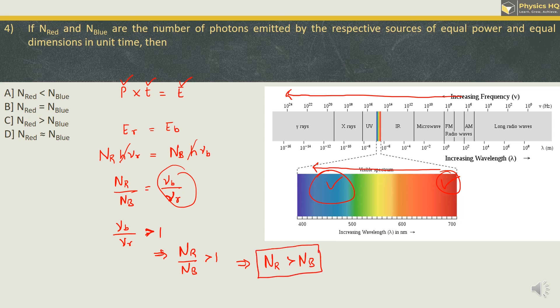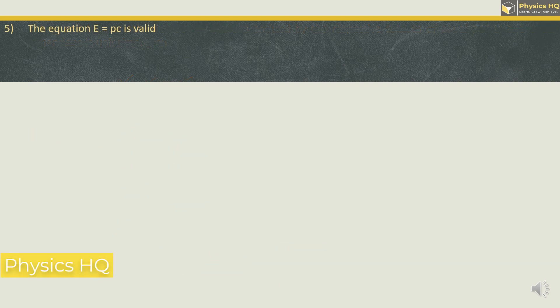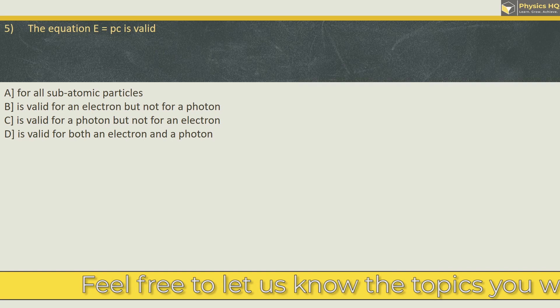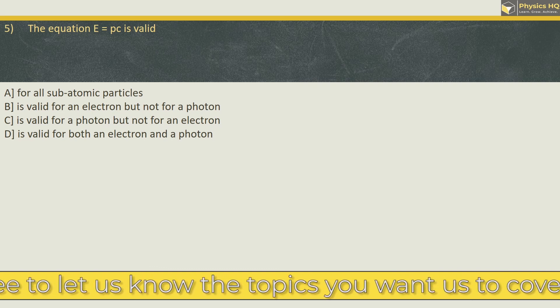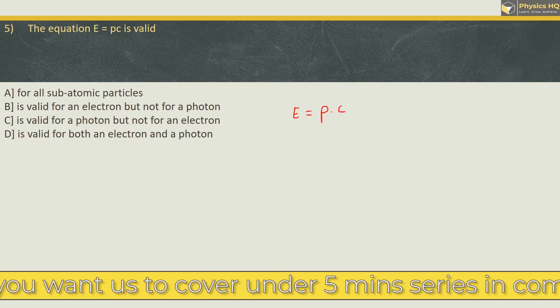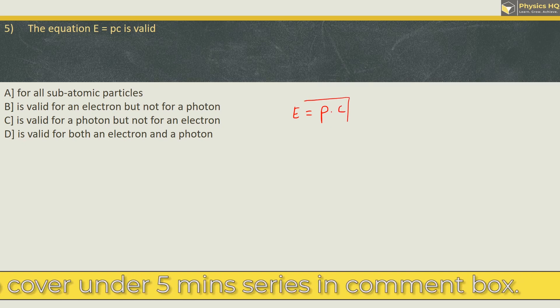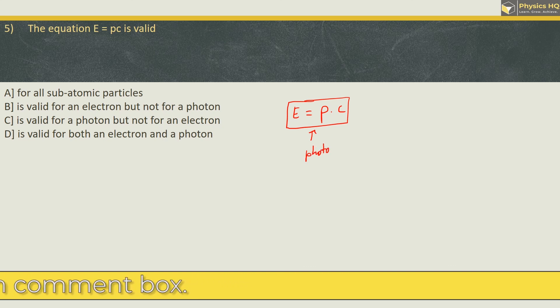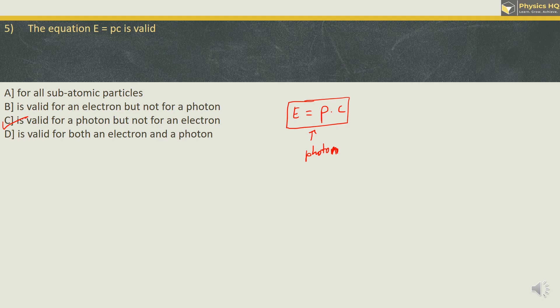Let us check out the next MCQ. The equation E equal to PC is valid for all subatomic particles, for an electron but not for a photon, for a photon but not for an electron, or valid for both an electron and a photon. Now this equation energy equal to momentum into the speed of light, it is particularly defined for a photon which does not have mass. Therefore, correct option is option C. It is valid for a photon but not for an electron. Hope you all understood this.